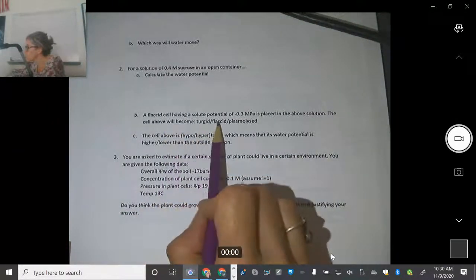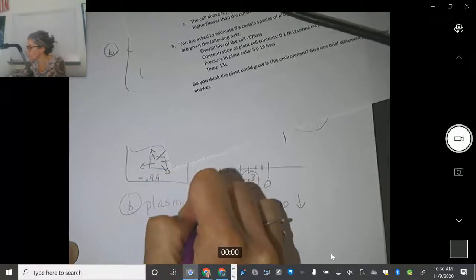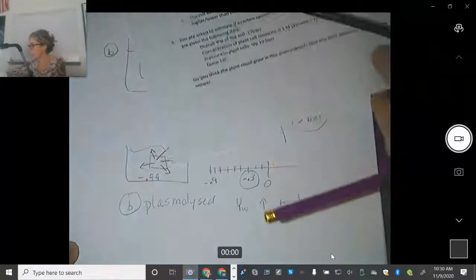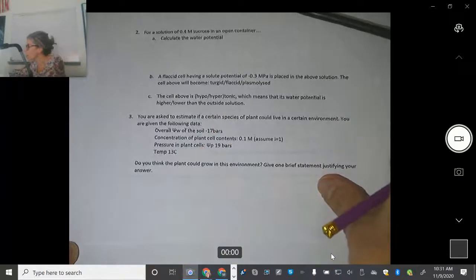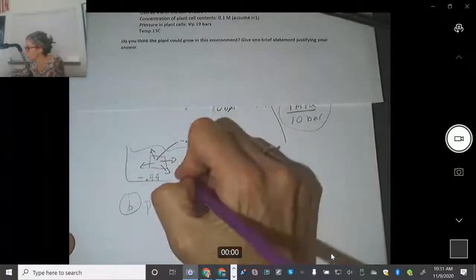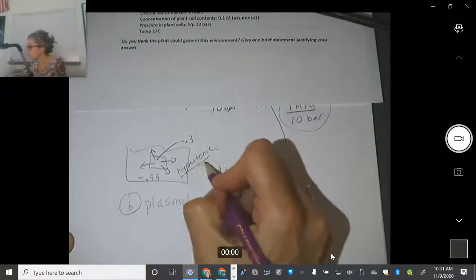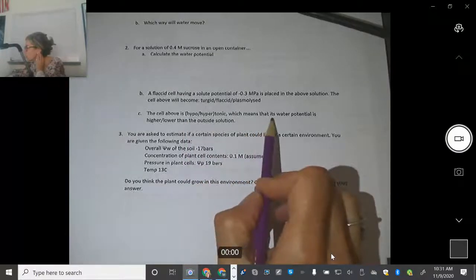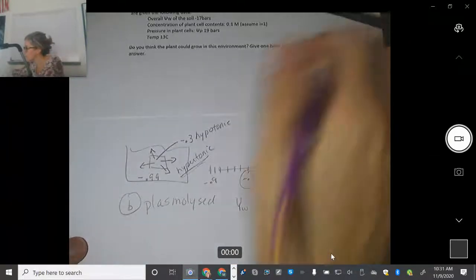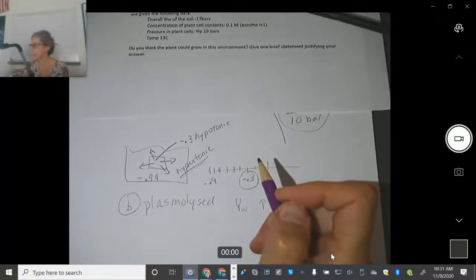So will the cell become turgid, flaccid, or plasmolyzed? It's going to become plasmolyzed. So the answer to B is plasmolyzed, which means so much water has left that the cell membrane has pulled apart from the cell wall. And then the cell above is what compared to the water potential. If water's coming out, that means the solution is hypertonic. And that's generally what I want you to know. But if the solution is hypertonic, that means the cell itself must be hypotonic, which is actually what this question asks, which is kind of ridiculous. So the cell above is hypotonic, which means that its water potential is higher than outside because it's going off that way. Does that make sense? So you're going to circle hypo and higher. So that is number two.